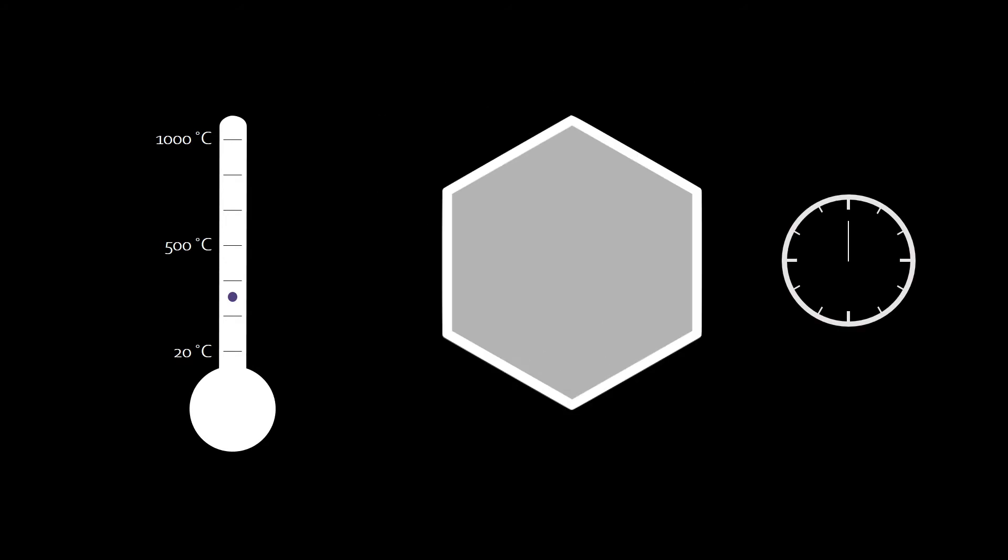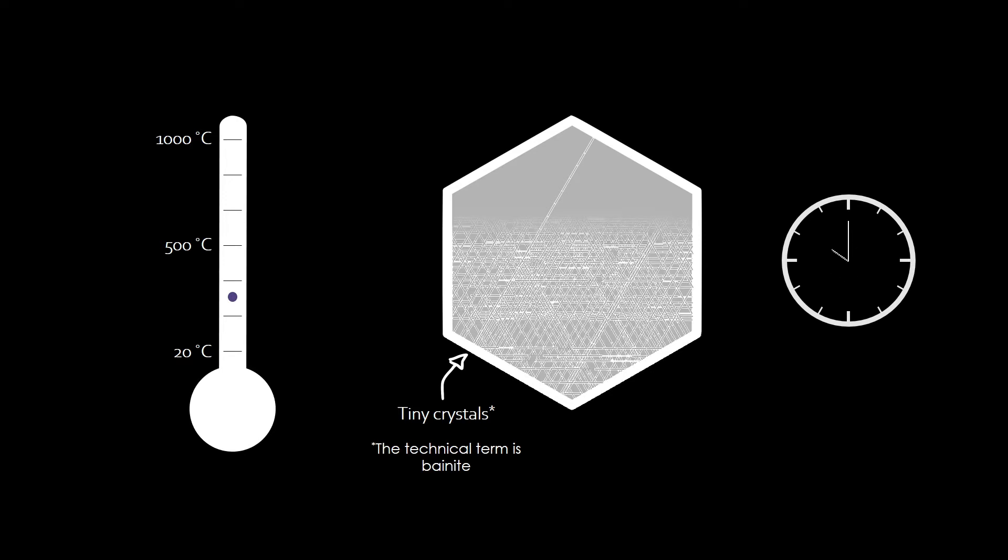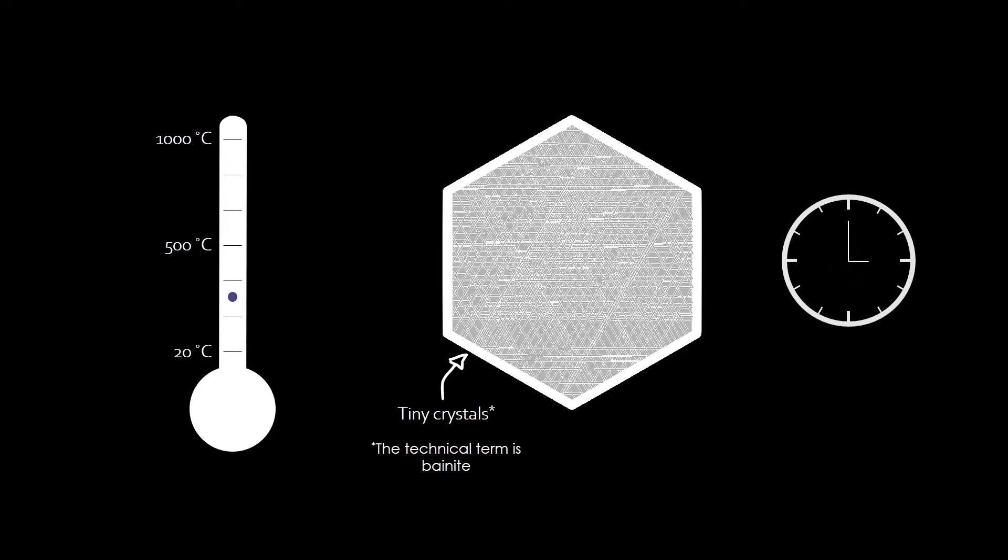How long we have to wait depends on the steel. It can take from a couple of minutes to days or weeks. There is even a steel at the Science Museum in London that started forming these tiny crystals in 2004 and it will only be ready in 2104. That's 100 years of waiting!